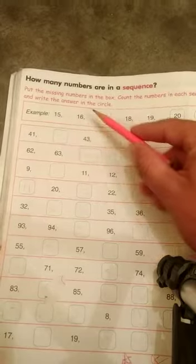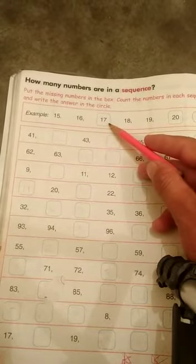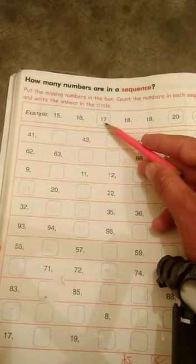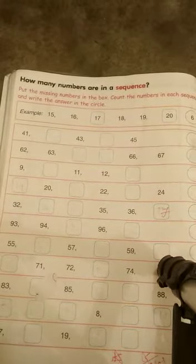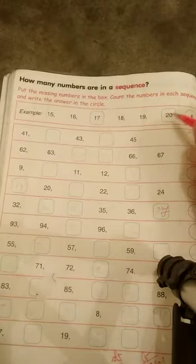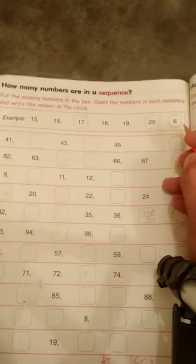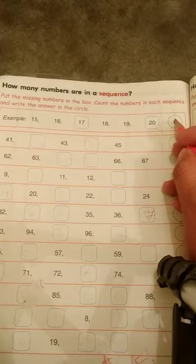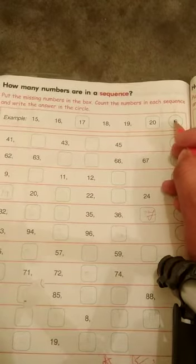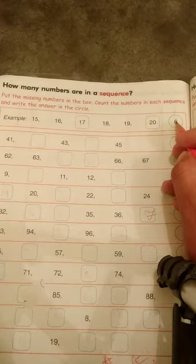15, 16, then here we have empty box. Here we have 17, then 18, 19, then empty box, 20. Then next work, we have total count: 1, 2, 3, 4, 5, and 6. And write here 6, and you have total number right here. Okay.